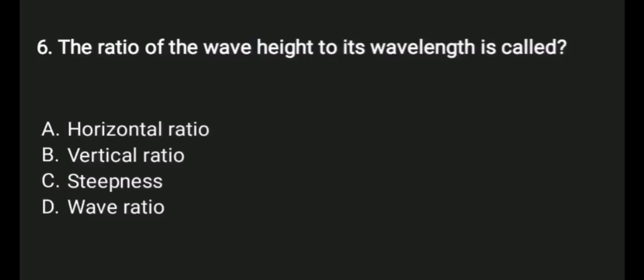6. The ratio of the wave height to its wavelength is called A. Horizontal ratio, B. Vertical ratio, C. Steepness, D. Wave ratio. Answer: C. Steepness.